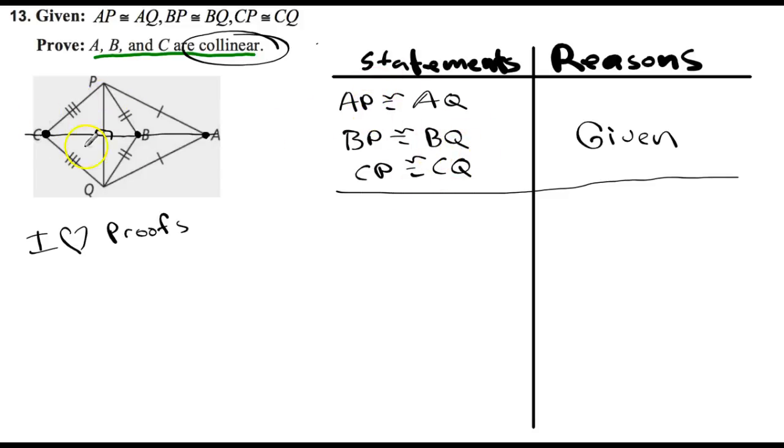And that's why I went ahead and wrote down the given. We're going to start with PC being congruent to CQ. What's that tell me? It says C is equal distant from point P and point Q.